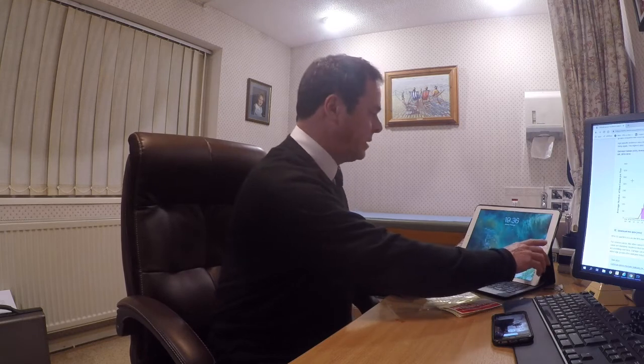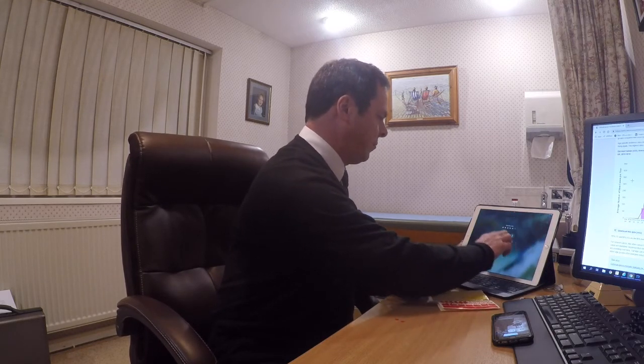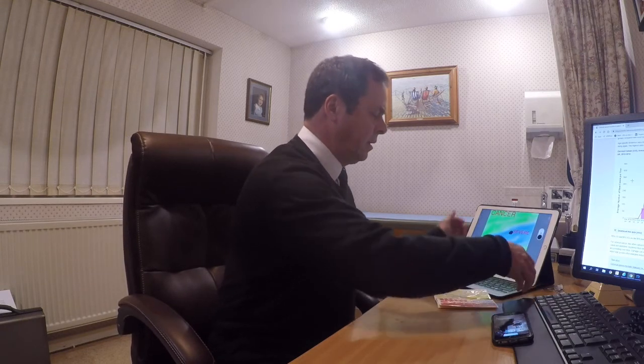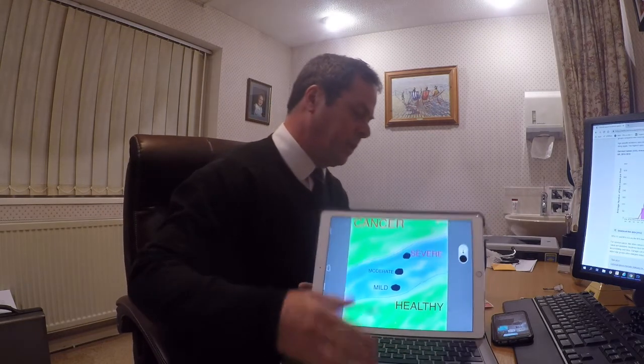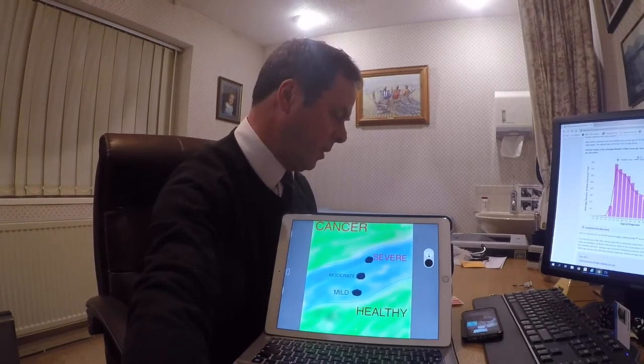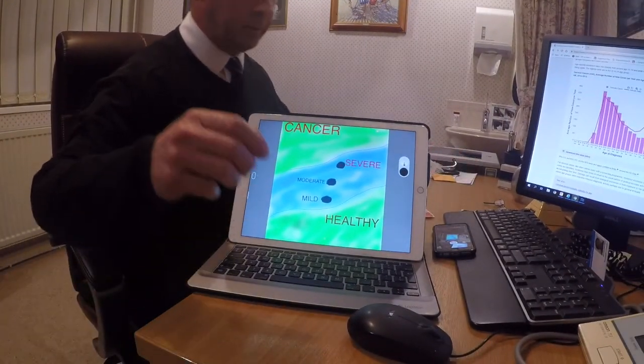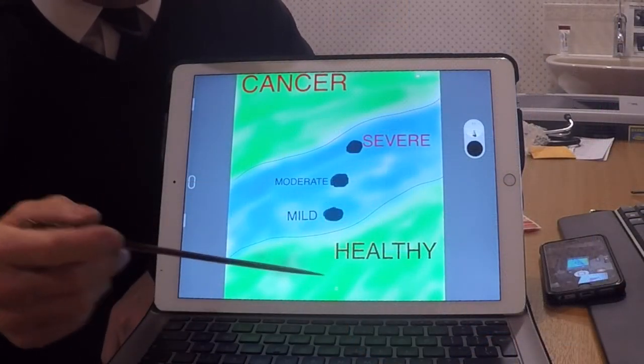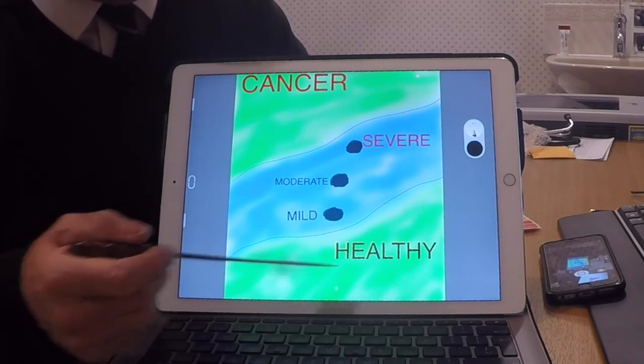So I'm going to show you a little sketch that I did to demonstrate this process. Imagine you have a river. On one side of the river, one bank, you've got healthy cells.